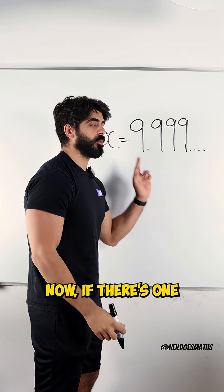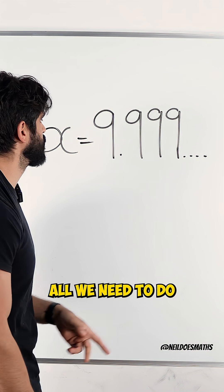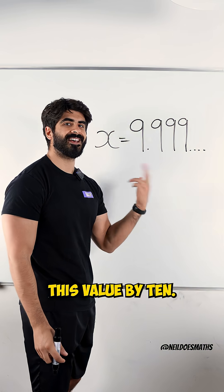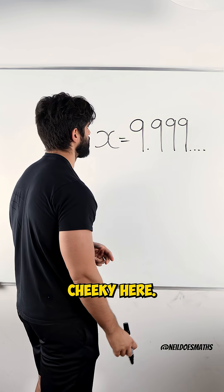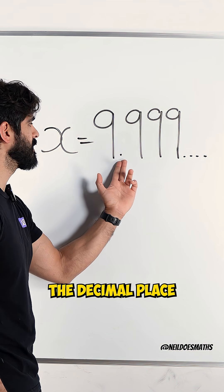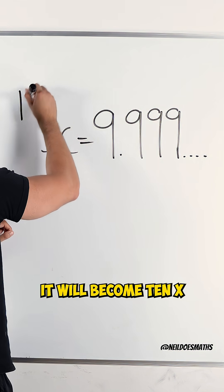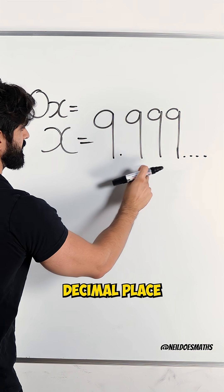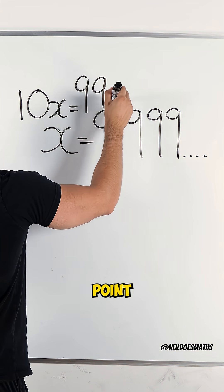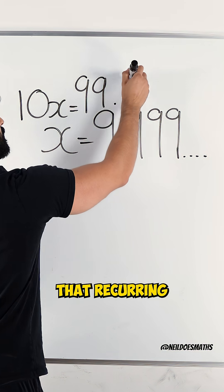Now, if there's one number recurring, all we need to do is multiply this value by 10, and then we're going to do something cheeky here. If I multiply this by 10, the decimal place will move once to make it a larger number. It will become 10x equals, moving that decimal place becomes 99 point, and then we still have that recurring decimal.